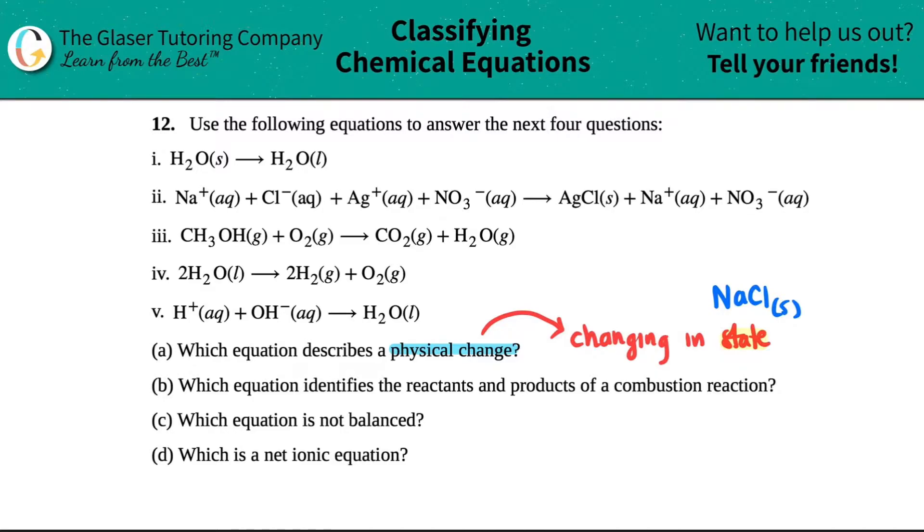You would just be going from one state, an 's' here means solid, and it just has to go to a different state. Maybe I would take it to NaCl liquid. This would be melting if I go from solid to liquid. But if you notice, the compound stays exactly the same. That's a physical change. The compound or element has to stay exactly the same on the reactants and the product.